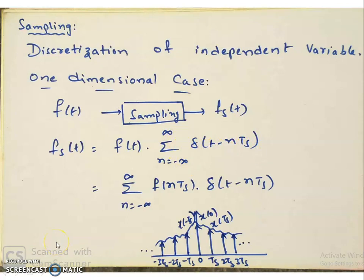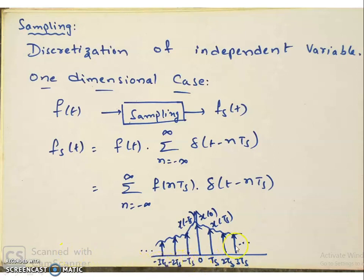This multiplication of F of t with the impulse train results in summation over n from minus infinity to infinity of F of n·ts multiplied with delta of t minus n·ts. F of t multiplied with delta of t minus n·ts is nothing but F of n·ts multiplied with delta of t minus n·ts. The impulse train gets modulated with the value of F of t — these are F of minus ts, F of 0, F of ts — taking the values at 0, ts, 2ts, 3ts, minus ts, minus 2ts, minus 3ts and so on. We call this the sampled signal Fs of t, sampled at uniform intervals — this is called uniform sampling.